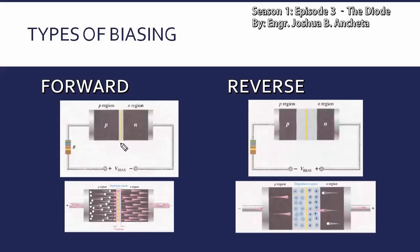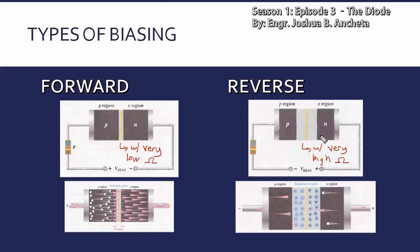Itong narrow depletion region, kinukonsider din ito na with very low resistance, or yung ohmic value niya very low. So kapag very low ang resistance, mababa yung magre-resist ng flow of current, so therefore makakadalo yung electrons, makakaproduce ng electric current. While for reverse bias condition with wide depletion region, this is a depletion region with very high resistance or ohmic value. So kapag high ang magre-resist, may iiwasan or mabablock yung flow of electrons — meaning walang electric current kapag reverse bias condition.